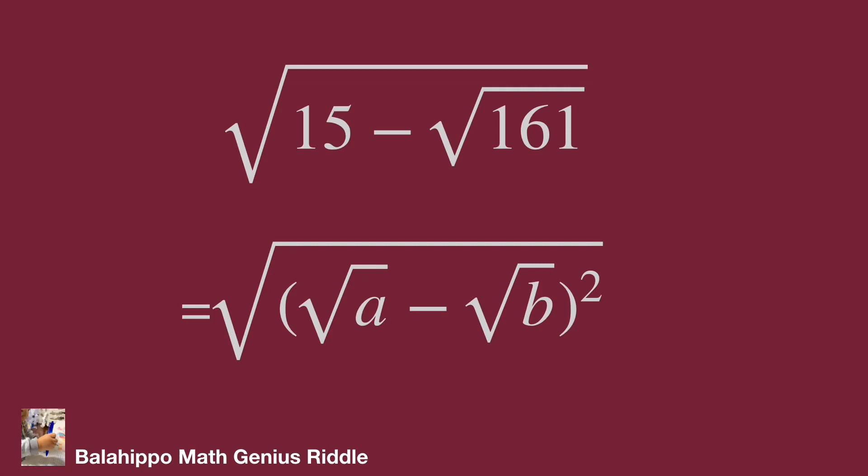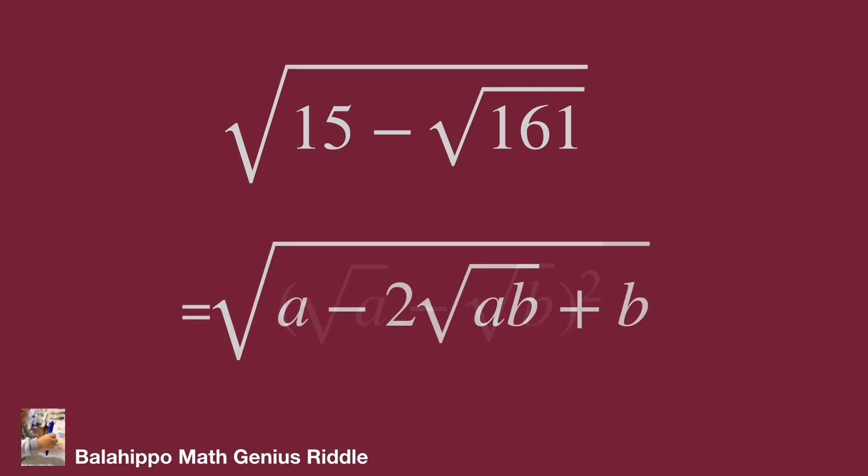Develop the quantity inside the square root. It is equal to a minus 2 times √(ab) plus b.